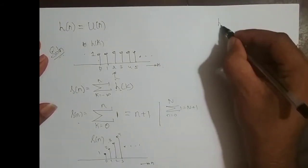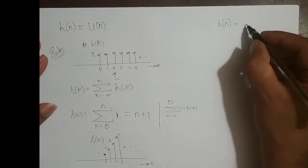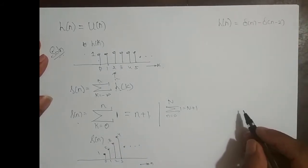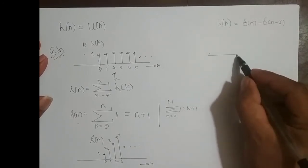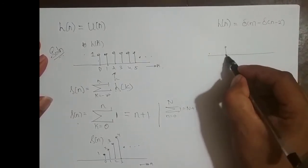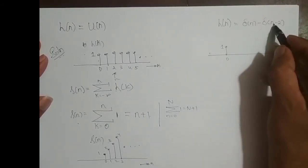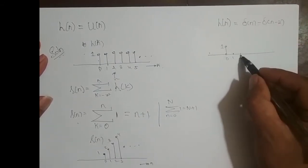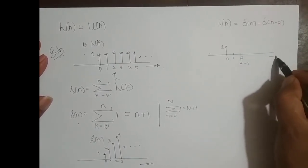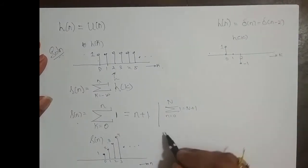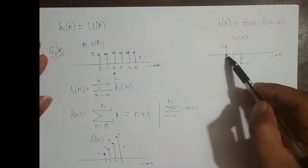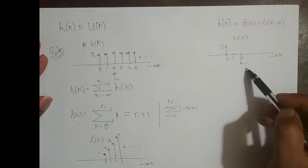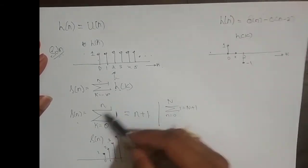We will take up one more. The impulse response is h of n equals delta of n minus delta of n minus 2. It is a finite length sequence. Delta of n is at n equal to 0 with amplitude 1. Delta of n minus 2 means delta of n shifted right two times, so it appears at position 2 with amplitude scaled by minus 1. I will write it directly in terms of k.